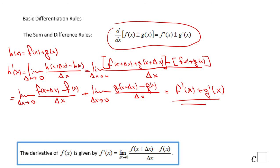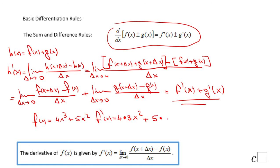So basically, if I have a function f(x) = 4x cubed plus 5x squared, the derivative will be: 4 — using the constant multiple rule — times the derivative of x cubed, which is 3x squared (move the 3 up front, keep the base, drop 1 from the power), plus — using the sum rule — 5 times 2x to the power of 1. So the final answer is 12x squared plus 10x.